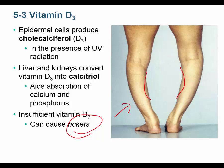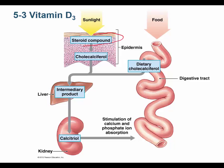Vitamin D3 synthesis begins in the skin when UV radiation hits it. Sunlight hits a steroid compound — remember that steroid compounds have that cyclopentanophenanthrene ring. When sunlight hits your skin, that steroid compound becomes cholecalciferol. That is the beginning of vitamin D.